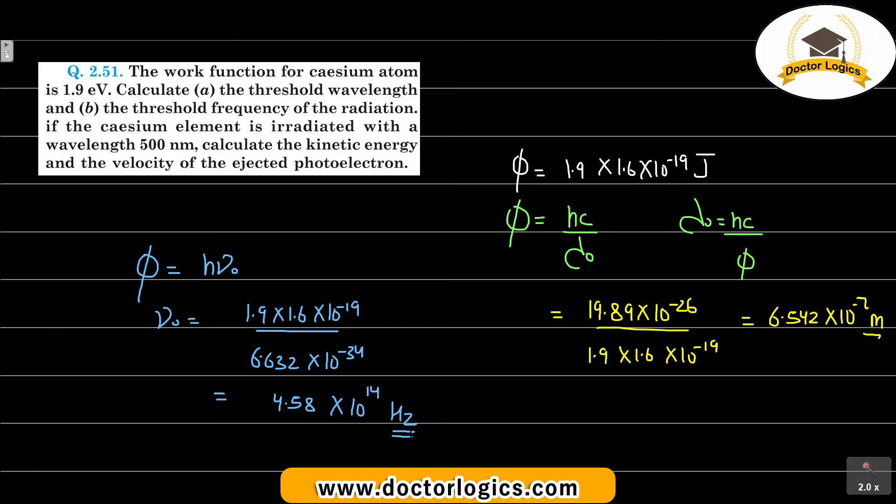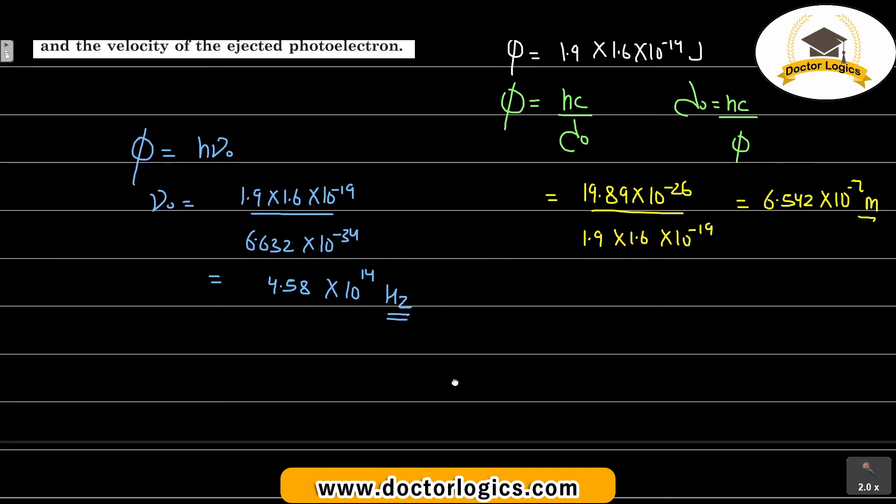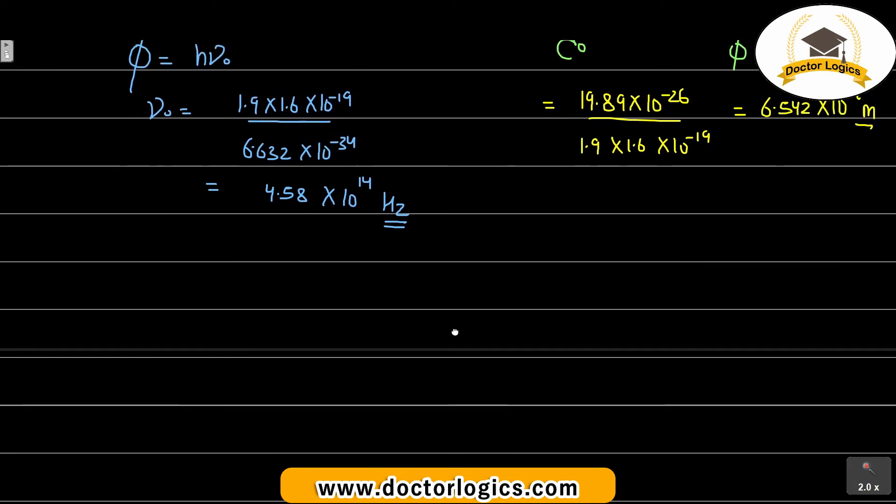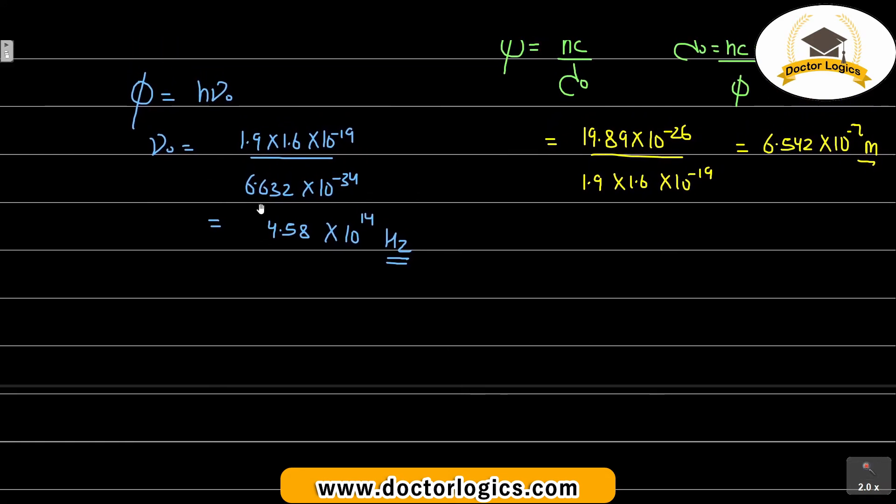Now the third part: if the cesium element is irradiated with the wavelength of 500 nanometer, calculate the kinetic energy and the velocity. The energy we provide is corresponding to 500 nanometer.